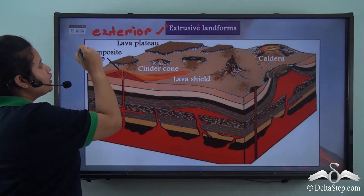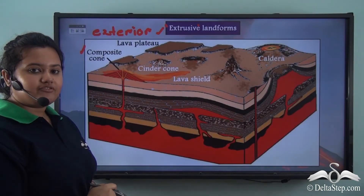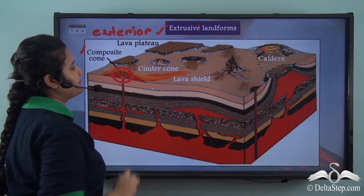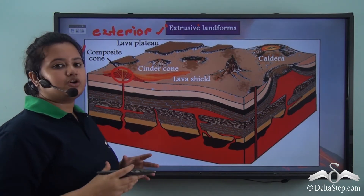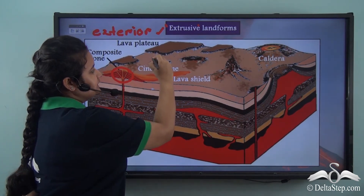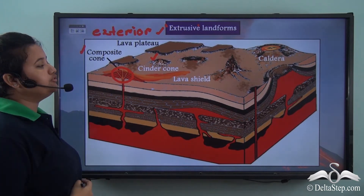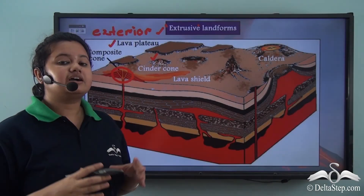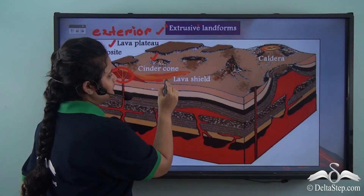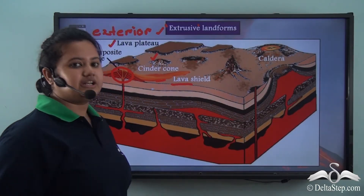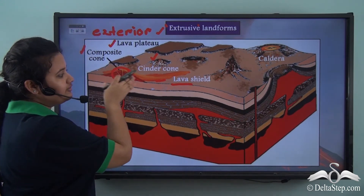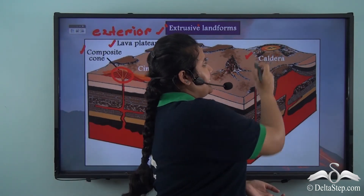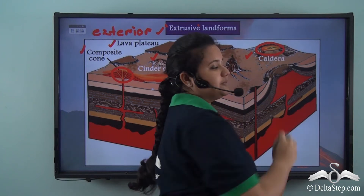A composite cone is an extrusive landform where lava and other volcanic materials come out through multiple cracks. Cinder cones are formed if lava comes out through a single opening. A lava plateau is formed when lava condenses in successive sheets. A lava shield is formed when lava spreads far away from the central point. Finally, a caldera is the circular depression caused by a volcano.